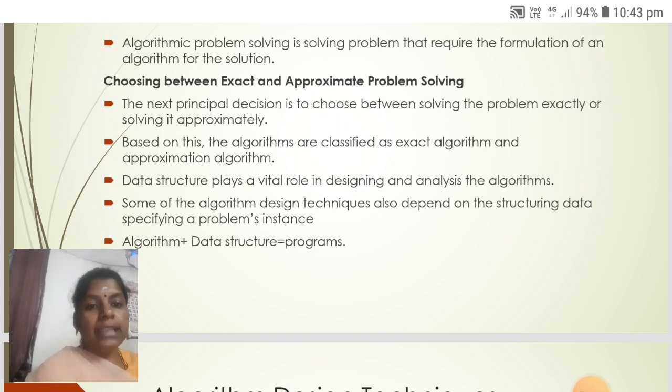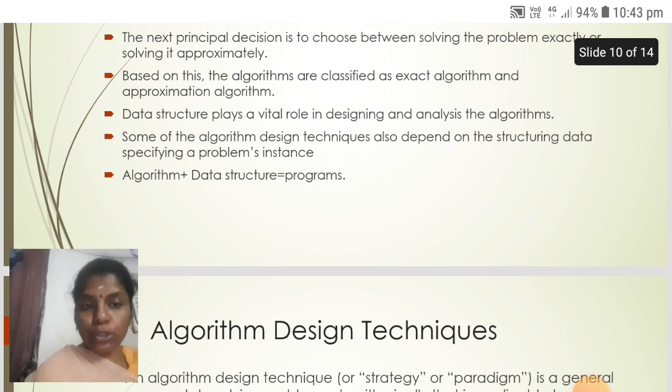The next principle decision is to choose between solving the problem exactly or solving it approximately. Based on this, the algorithms are classified as exact algorithm and approximation algorithm. Data structure plays a vital role in designing and analysis of the algorithm. Some of the algorithm design techniques also depend on the structuring data specifying a problem's instance. Algorithm plus data structure equals programs.